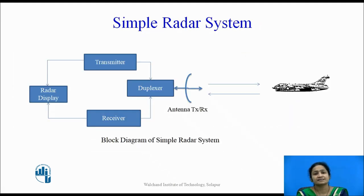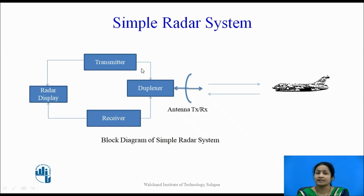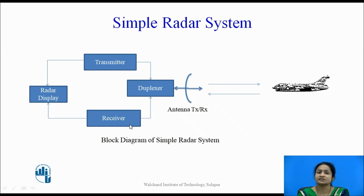A basic radar system consists of a transmitter and a receiver, both connected to a duplexer circuit. The duplexer circuit is connected to the antenna. Initially, transmitters and receivers used separate antennas to transmit and receive signals. But nowadays, a duplexer is used to connect a single antenna to both the transmitter and receiver. A transmitter transmits the signal through the duplexer towards the target, and the echo signals are received back towards the receiver, which are then displayed on the radar display. There are different types of radar displays, which will be discussed in the next lectures.